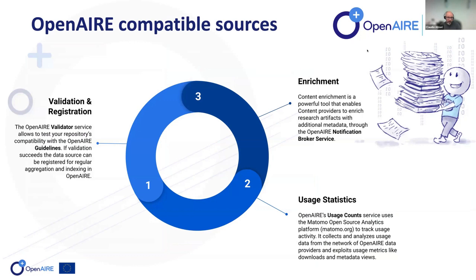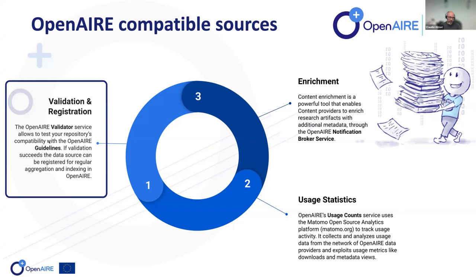OpenAIR Provide is essentially an umbrella service that covers validation of contents available in a given repository and registration of the repository itself. Users can test validation against a given version of the guideline and perform the registration. It also features enrichments that OpenAIR builds through the OpenAIR Broker Service, and allows exploring usage statistics — views and downloads from the Usage Counts service. Today we will focus on validation and registration.